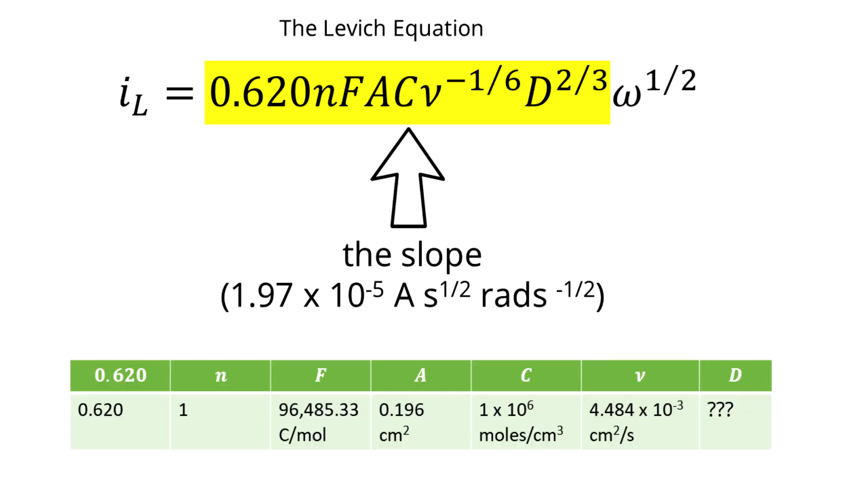I've already looked up numbers for things like the kinematic viscosity, the calculated area of a five millimeter outer diameter working electrode, and they are applied here in this table along with the correct units for the Levich equation. Now I will do a little bit of algebra in order to solve for the diffusion coefficient.